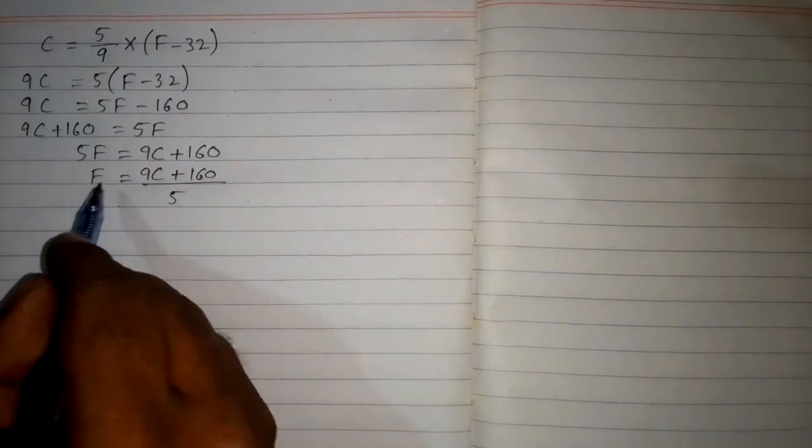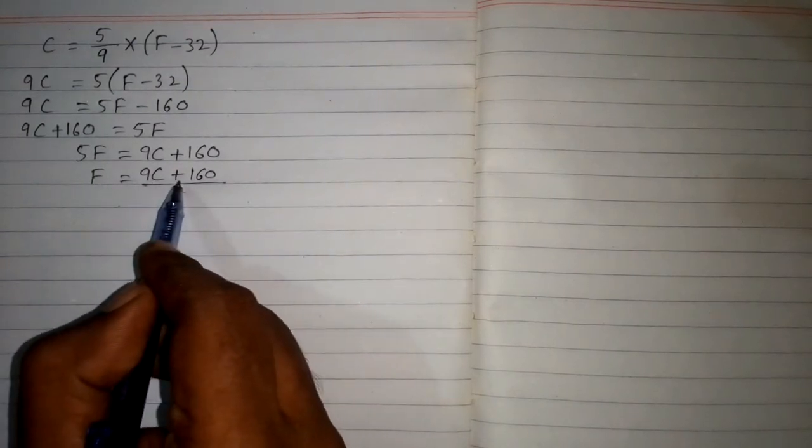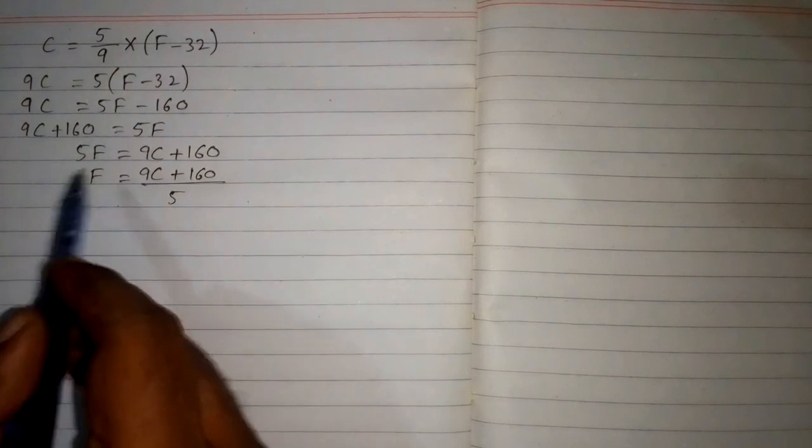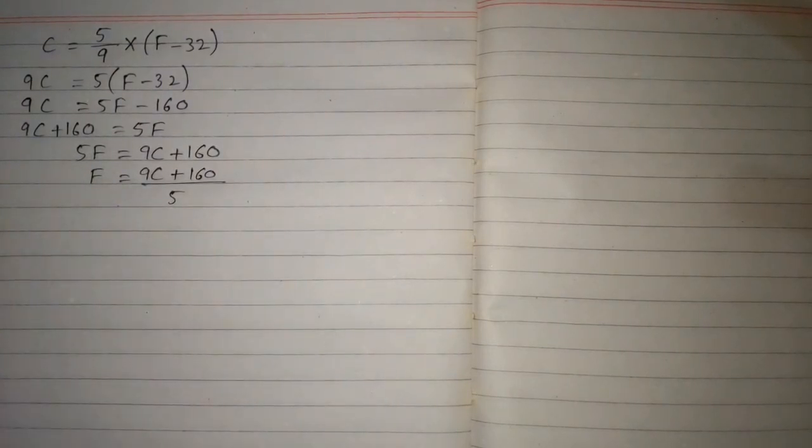So F = (9C + 160)/5 is the required answer. We can see that we have F on one side and all the other variables or numbers on the other side of the equation. So F has become the subject of the equation.